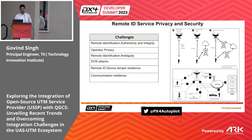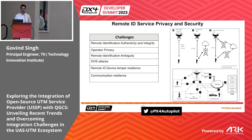In summary, the key challenges in this use case involve: remote identification authenticity and integrity, operator privacy, remote identification ambiguity, denial-of-service attacks, whether tracker devices are temporally resilient, and communication resilience — meaning how you ensure network remote ID is submitted under jamming or heavy interference, and how you maintain real-time access to traffic alerts, conformance monitoring alerts, and weather information.